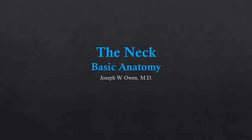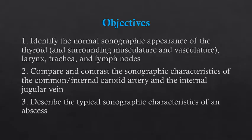This is the first screencast in a series of three covering neck ultrasound. We will start with basic anatomy. The learning objectives for this ultrasound workshop include identifying the normal ultrasound appearance of the thyroid, larynx, trachea, and lymph nodes, being able to compare and contrast the common and internal carotid artery to the internal jugular vein, and being able to describe the characteristics of an abscess.